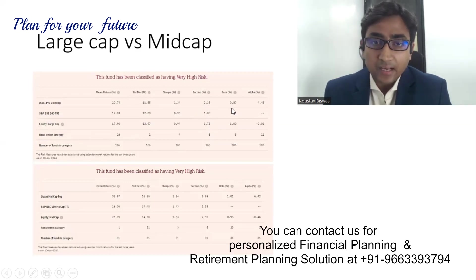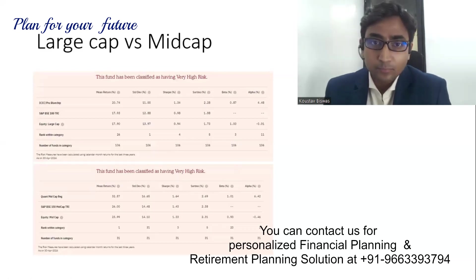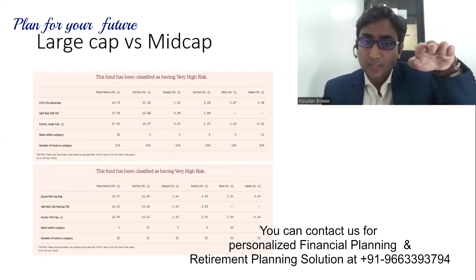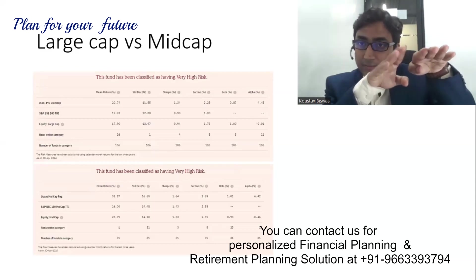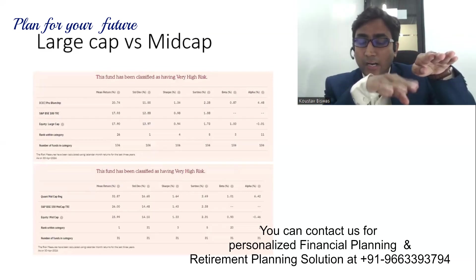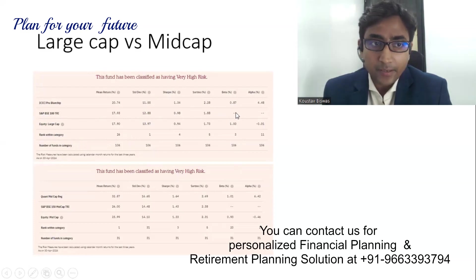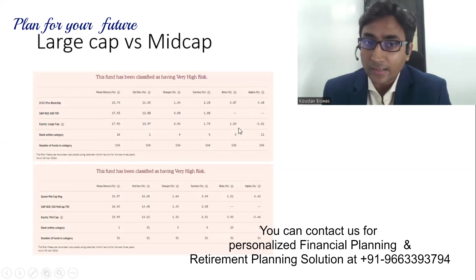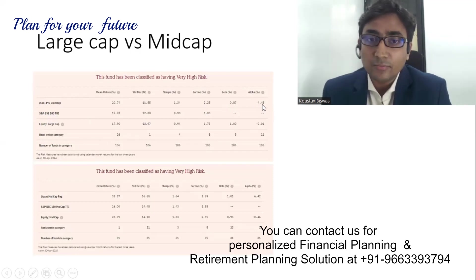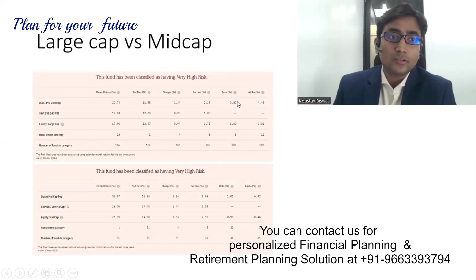Now if I see beta — beta talks about portfolio sensitivity to market movement. If my Sensex goes up by one, how much does this portfolio go up or down? It is 0.87, versus the benchmark BSE 100. So beta is 0.87 and large cap category is 1. Alpha, on top of the BSE 100 benchmark, my alpha is 4.48, so it is a very good fund, performing well. The large cap category is not performing that much, so this particular fund is good enough to invest in.